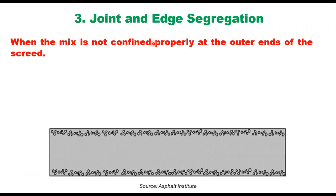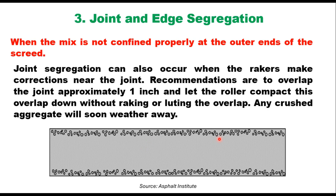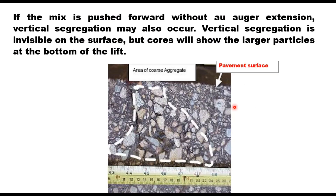The third is joint and edge segregation. When the mix is not confined properly at the outer ends of the street, this type of segregation is observed. Joint segregation can also occur when the rakers make corrections near the joint. The recommendation is to overlap the joint approximately one inch and let the roller compact this overlap down without raking or moving the overlap. Any crushed aggregate will soon weather away. If the mix is pushed forward without auger extension, vertical segregation may also occur — vertical segregation is invisible on the surface but cores will show the larger particles at the bottom of the lift and fine particles at the top.